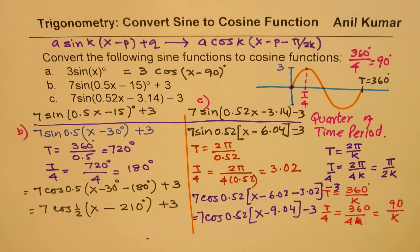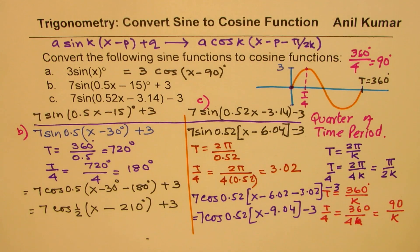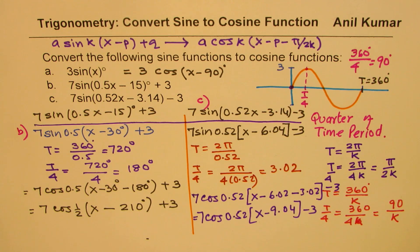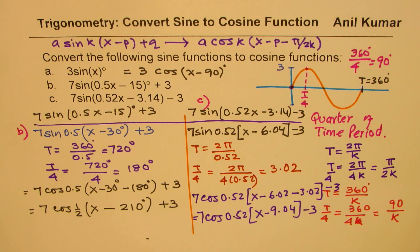The strategy here is: a quarter of the cycle should be taken away to write a sine wave as a cosine wave. I hope that makes sense. Feel free to write your comment and share your views. If you like and subscribe to my videos, that'd be great. Thanks for watching and all the best.